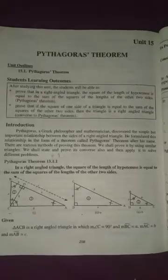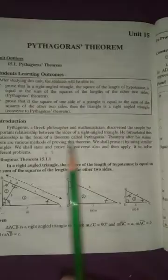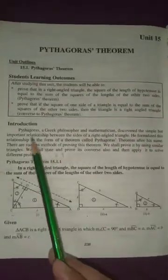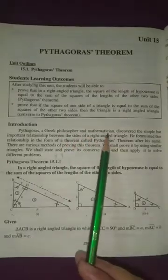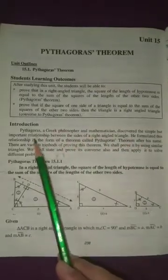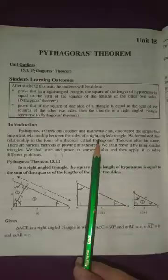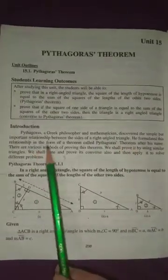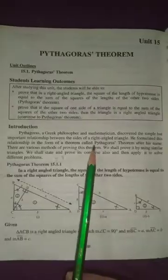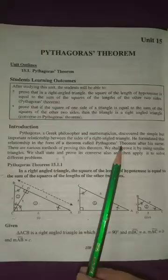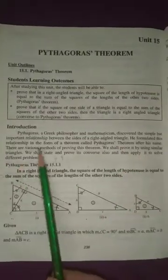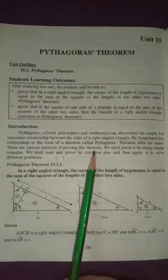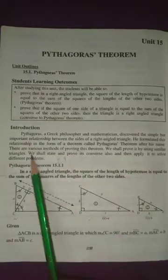Bismillah ar-rahman ar-raheem. Assalamu alaikum. Class 8th and 9th, Unit number 15 is Pythagoras Theorem. Pythagoras was a Greek philosopher and mathematician who discovered a simple but important relationship between the sides of a right-angled triangle. He formulated this relationship in the form of a theorem called Pythagoras Theorem, after his name. There are various methods of proving this theorem; we shall prove it by using similar triangles.